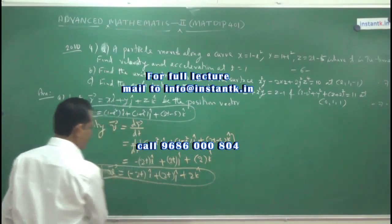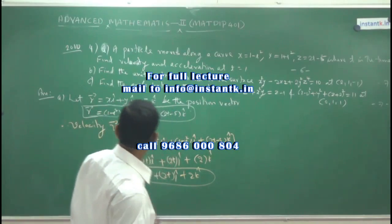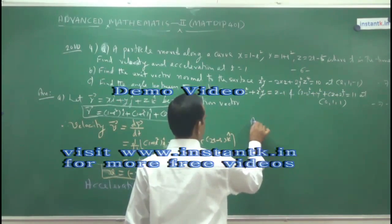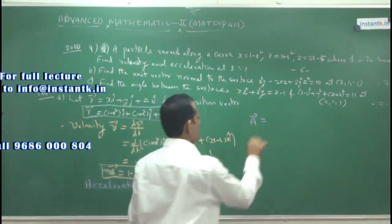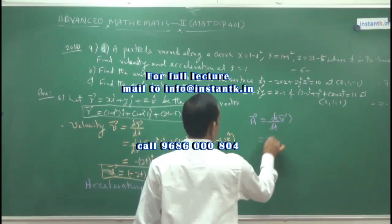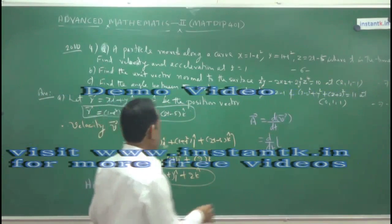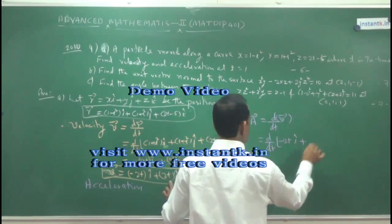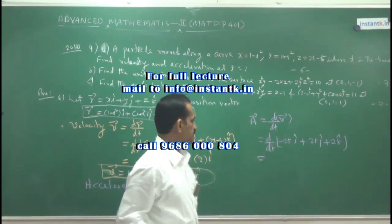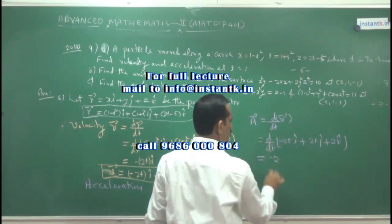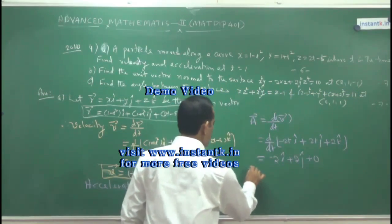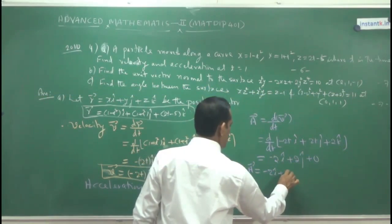Next, find the acceleration by differentiating velocity. Acceleration vector A equals dv/dt, where v is minus 2t i-cap plus 2t j-cap plus 2 k-cap. Differentiating: derivative of minus 2t is minus 2 i-cap, derivative of 2t is 2 j-cap, and 2 k-cap is constant so its derivative is 0. Therefore, acceleration equals minus 2 i-cap plus 2 j-cap. If the question asks for velocity and acceleration at t equals 1, substitute t equals 1 into the velocity and acceleration expressions.